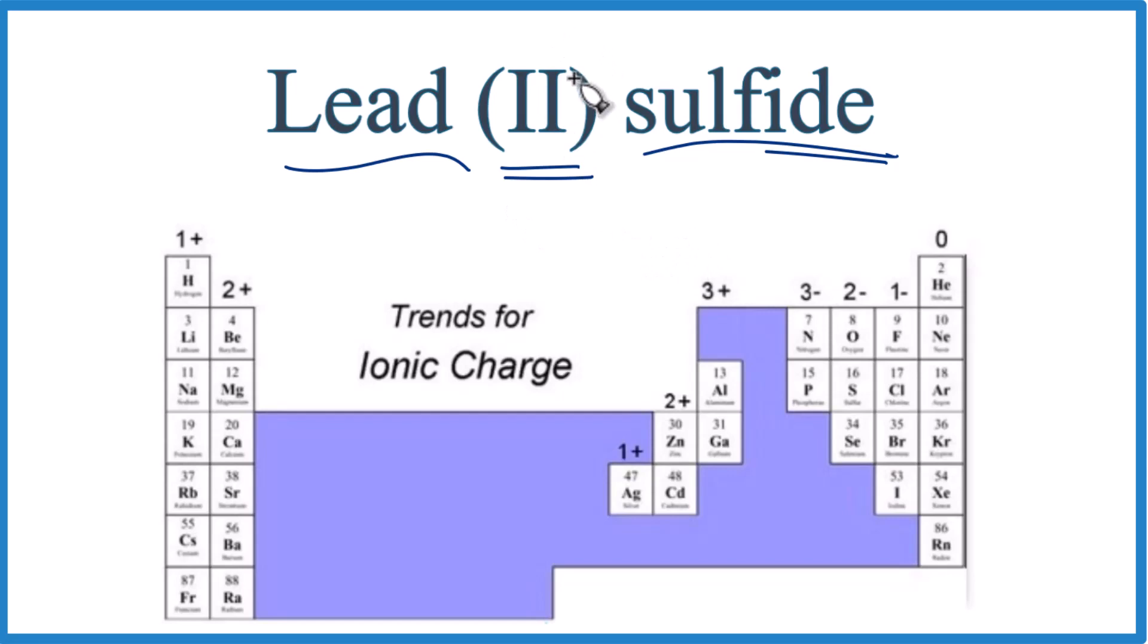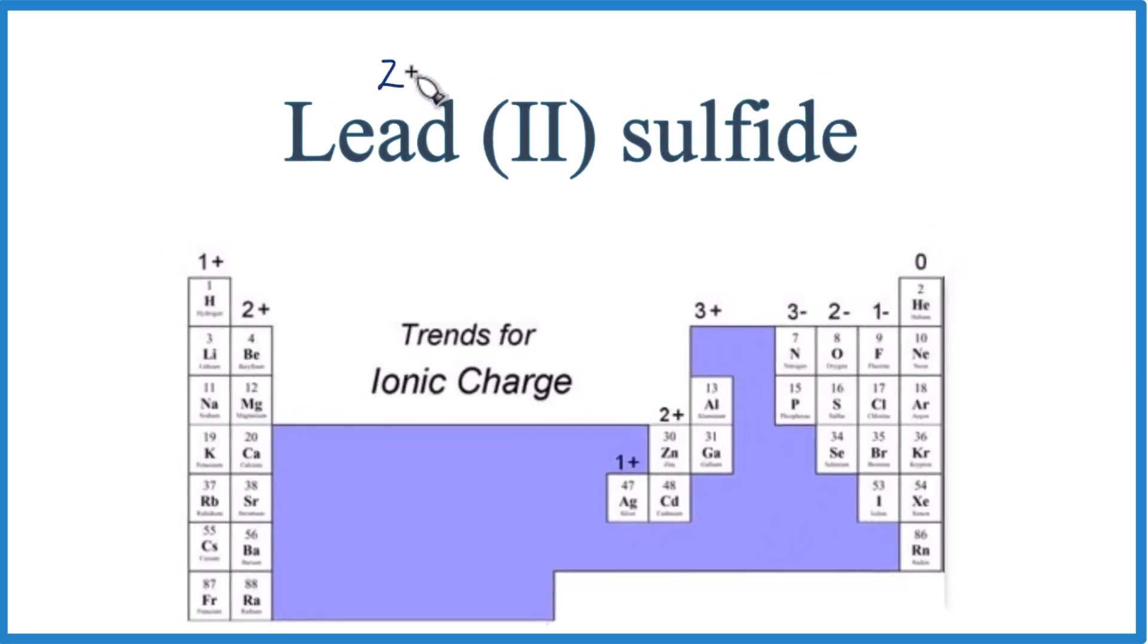The Roman numeral 2 here tells us a lot of information. First off, let's look at the charge. For lead, we can't tell. Lead's down here, it's a post-transition metal, so we can't really tell just looking at the periodic table. But the 2 here tells us that we'll have a 2+ charge.